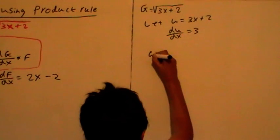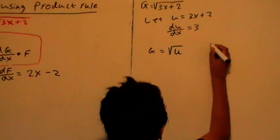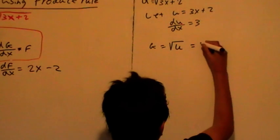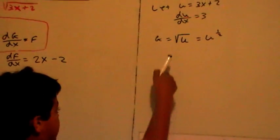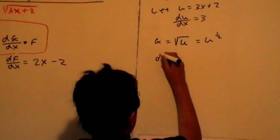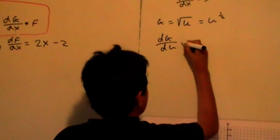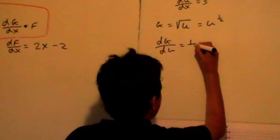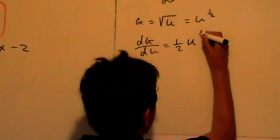Okay, g equals root u, which is also equal to u power half. And then, dg over du equals half u power negative half.